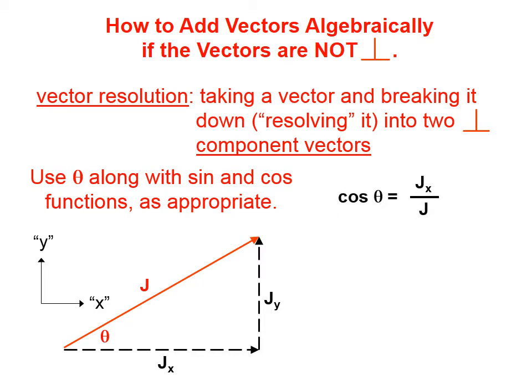The way we would do that is, we know that the definition of the cosine of this angle is that it is the length of Jx divided by J. Well, J and theta we know, so to find Jx, which is what we're looking for, we would simply multiply both sides of this relation by J, and that would yield this.